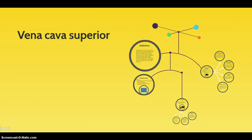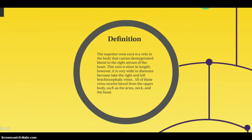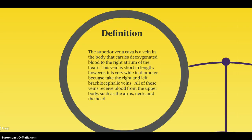Vena cava superior. The superior vena cava is a vein in the body that carries deoxygenated blood to the right atrium of the heart. This vein is short and wide in diameter because it takes the right and left brachiocephalic veins. All these veins receive blood from the upper body, such as the arm, neck, and the head.